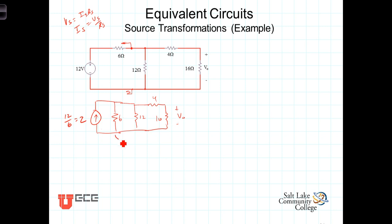All righty, now, in the process of doing so, we brought this 6-ohm resistor down here so that it's now in parallel with the 12-ohm. And 6-ohms in parallel with 12, that's 6 times 12 divided by 6 plus 12, that equals 4-ohms.